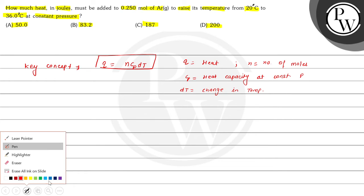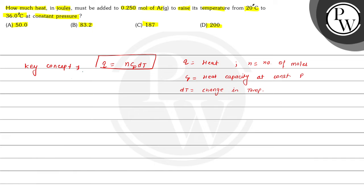Now, we can see that in this, we have to find out firstly the value of Cp. So in this, it is given that the gas is argon. Argon is a monoatomic gas.